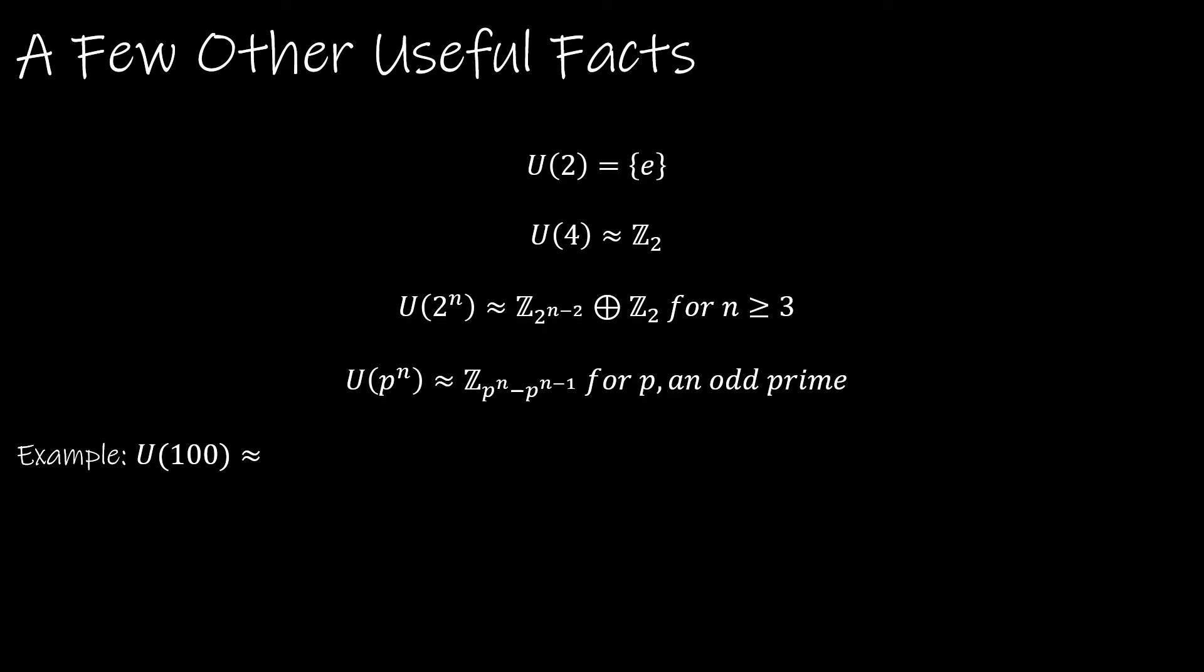We'll look at a few other useful facts as well. U(2) is actually just equals to the identity. U(4) is isomorphic to Z_2. And I'm not going to prove any of these, I'm just giving you these as facts. U(2^n) is isomorphic to Z_{2^{n-2}} with the external direct product with Z_2 for any n greater than or equal to 3. And U(p^n), where p is some odd prime value, is isomorphic to Z_{p^n - p^{n-1}}.